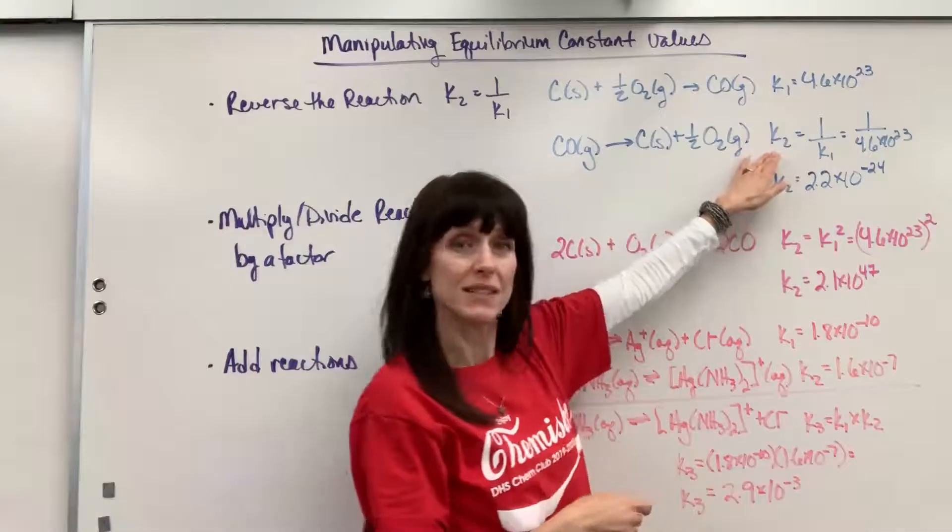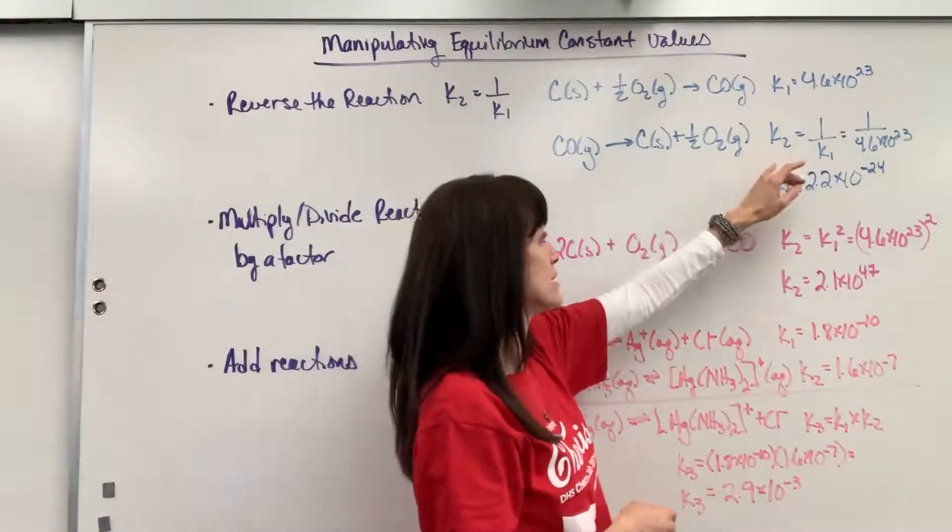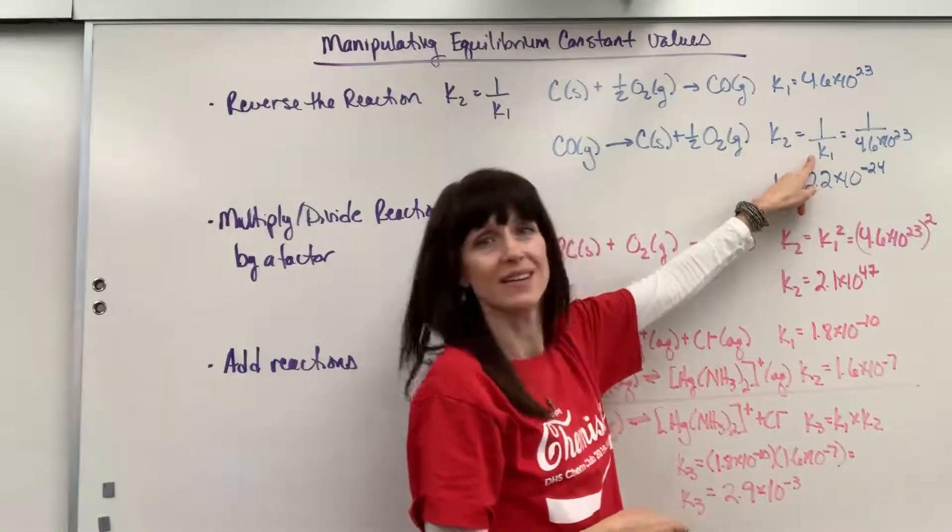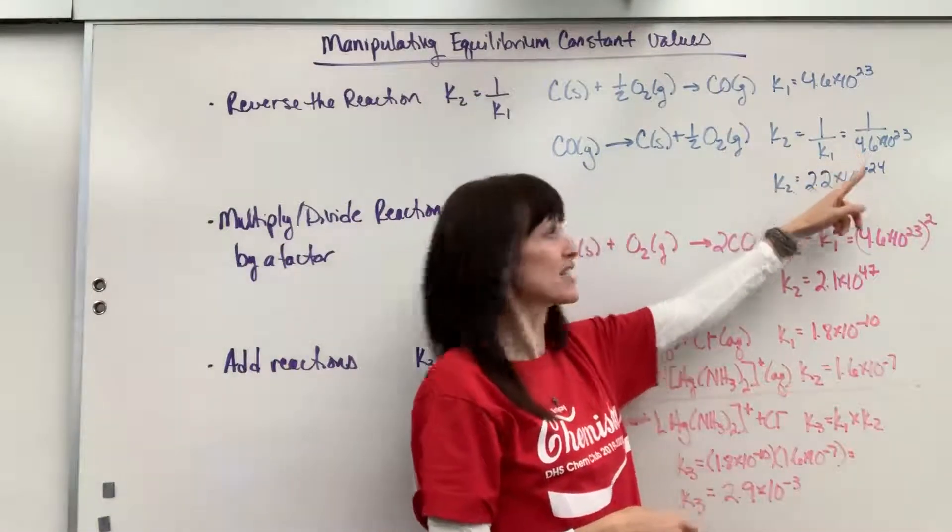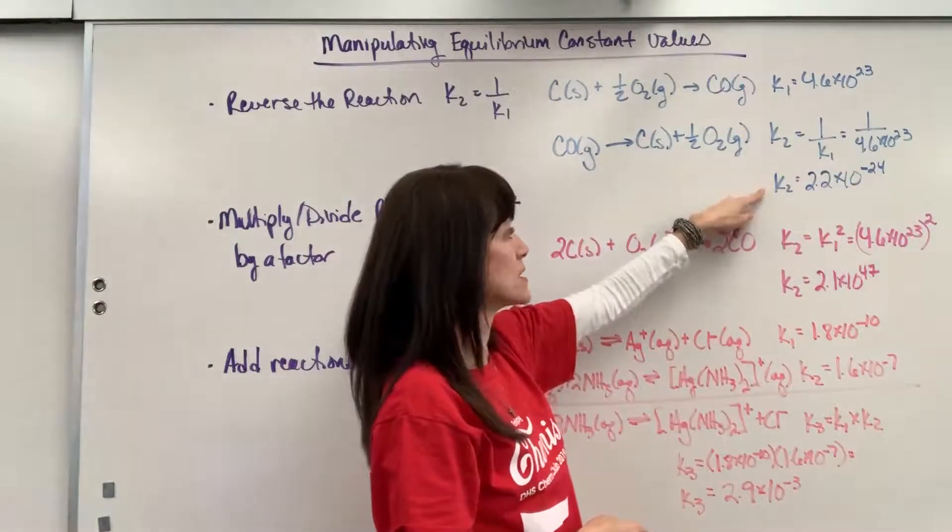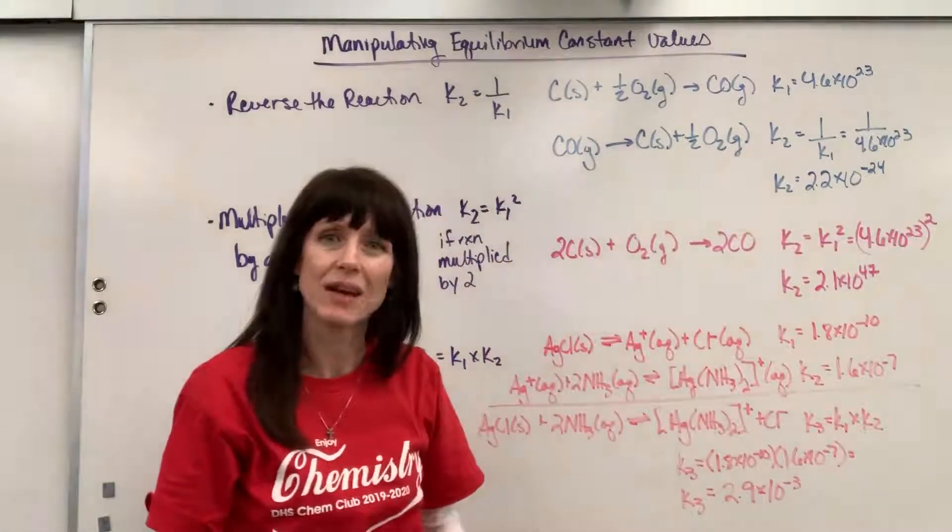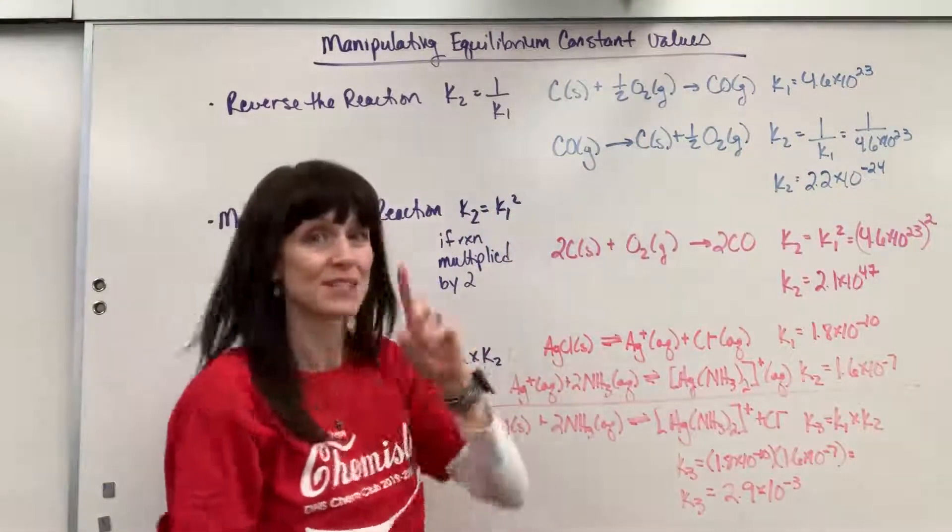So the value of this equilibrium expression is going to be 1 over the original one. So 1 over 4.6 times 10 to the 23. And so this equilibrium constant will be 2.2 times 10 to the minus 24. Okay, that's the first manipulation.